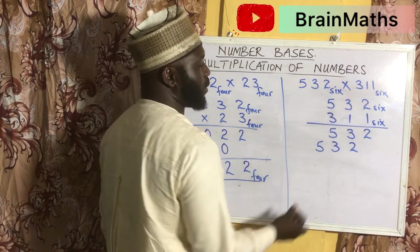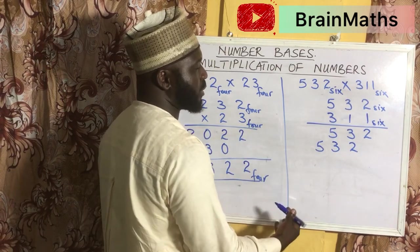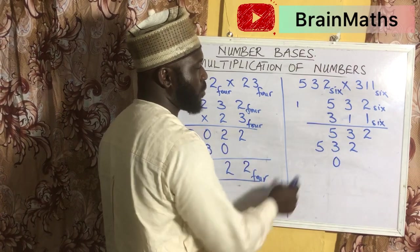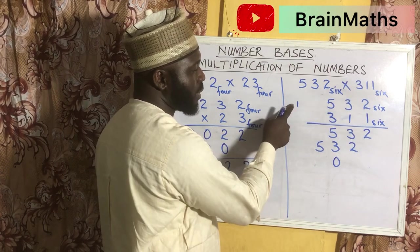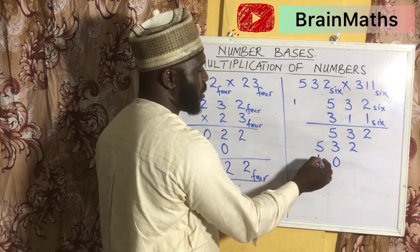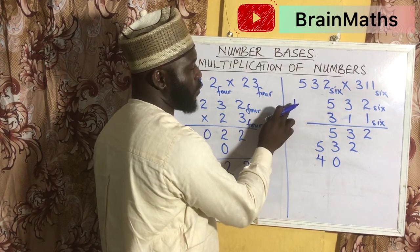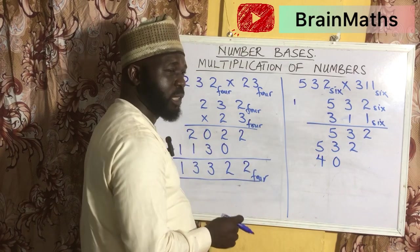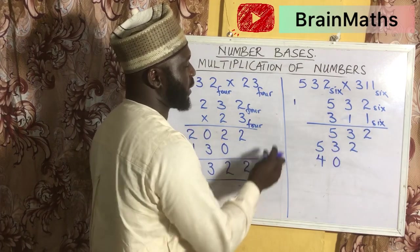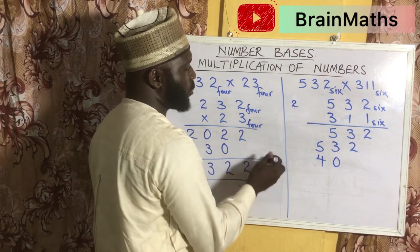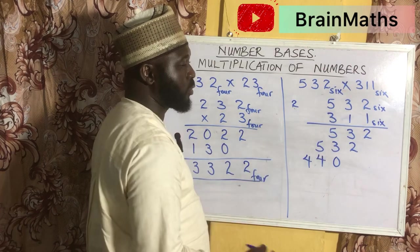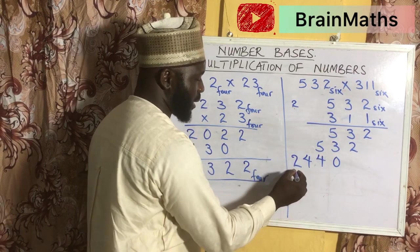For the third row, we multiply by 3. 3 times 2 is 6 — we cannot write 6, so how many 6s in 6? That is 1, remainder 0. 3 times 3 is 9, plus this 1, gives 10 — how many 6s in 10? That is 1, remainder 4. 3 times 5 is 15, plus 1, gives 16 — how many 6s in 16? That is 2, remainder 4. This 2 is written down as the last number since there is no further digit to multiply.